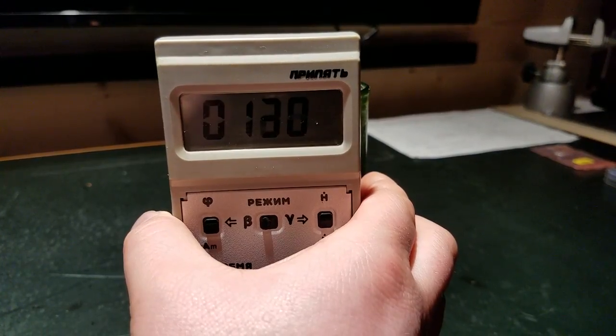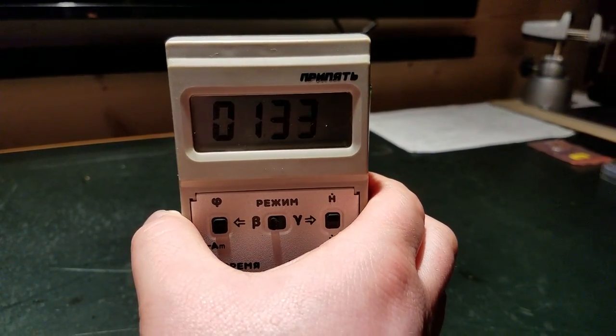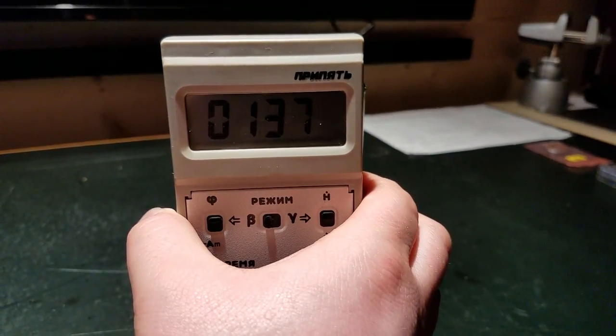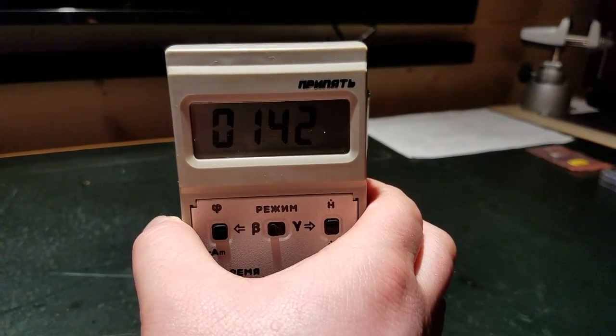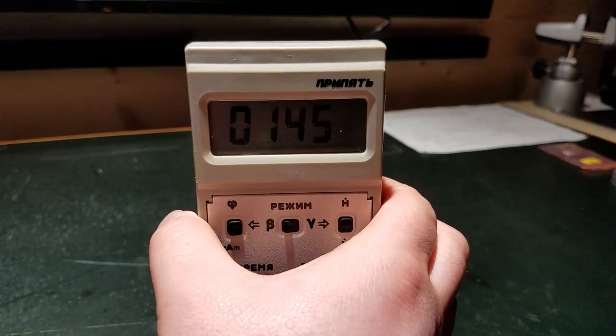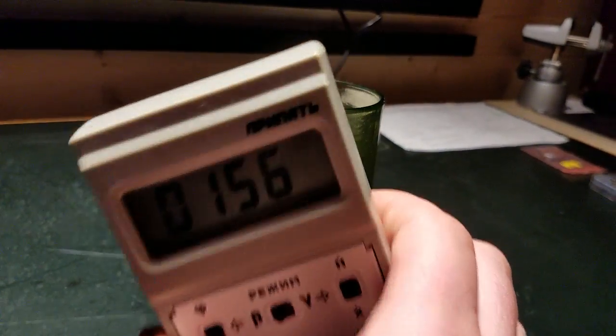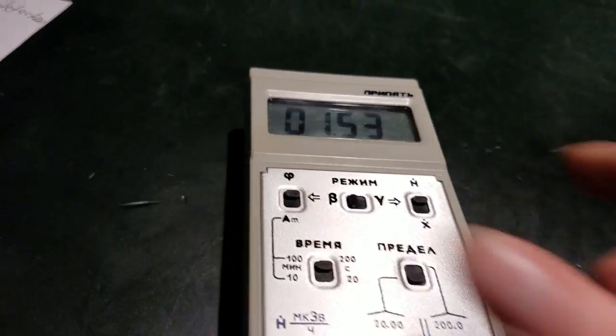Only problem is I suspect some of the readings from the shield are going to be bremsstrahlung, or maybe high-energy betas that aren't blocked properly by it. But anyway, you kind of get the idea, it's the beta flux density measurement with the shield out.